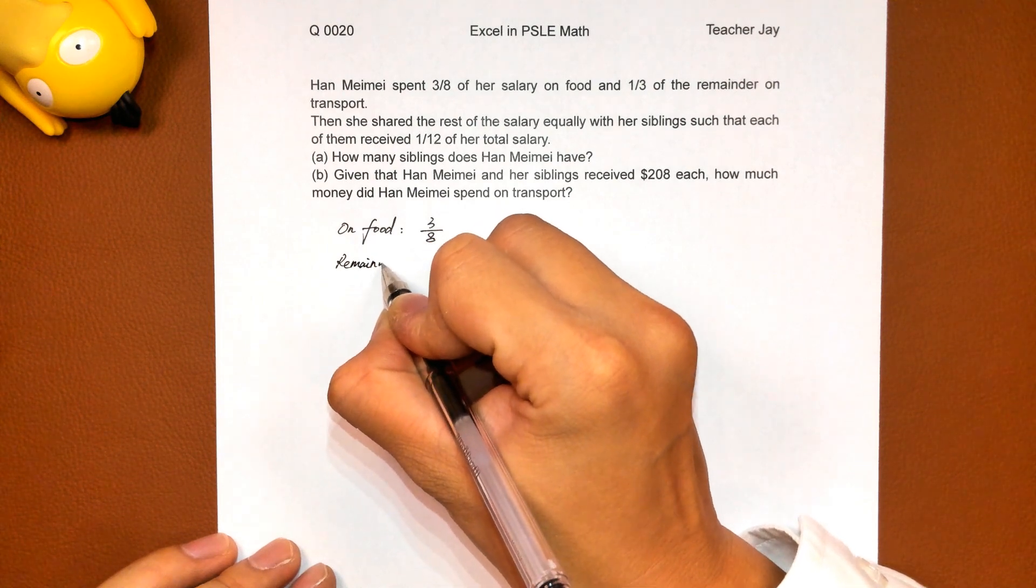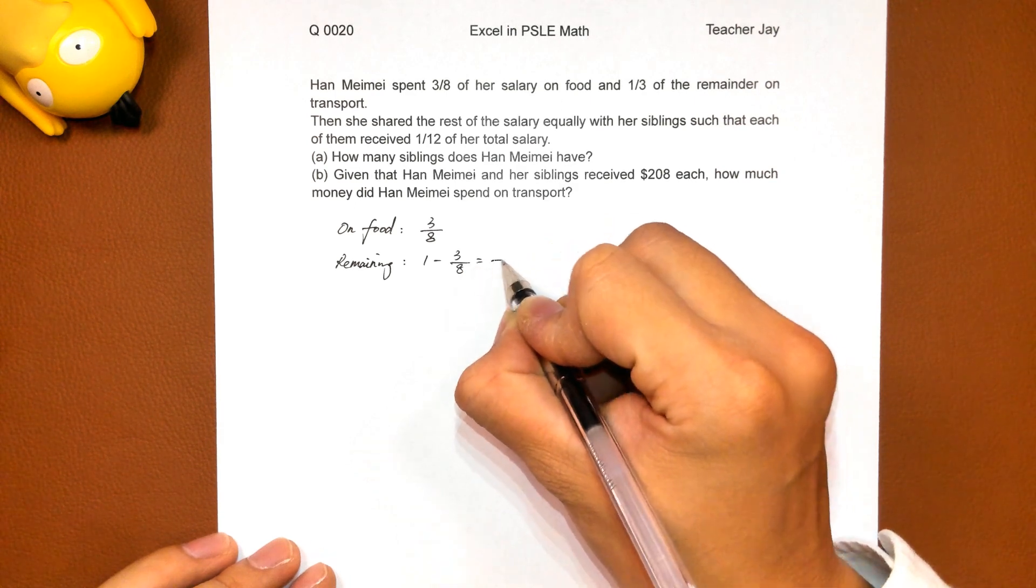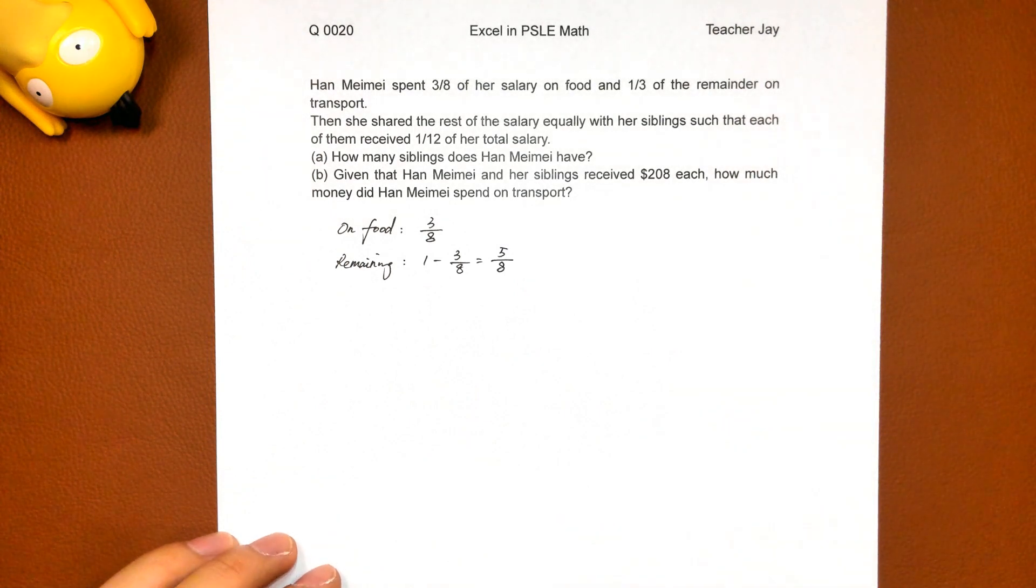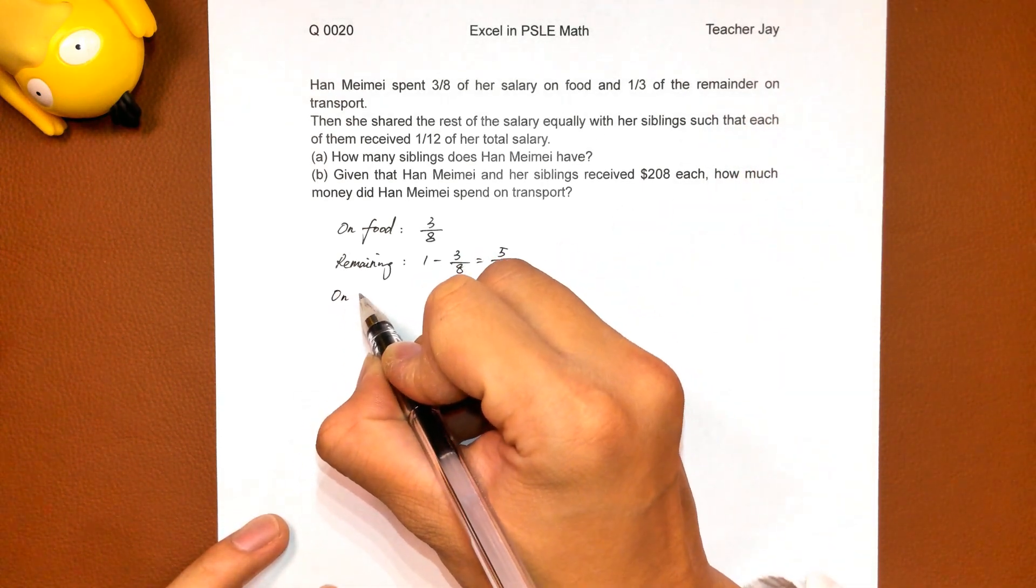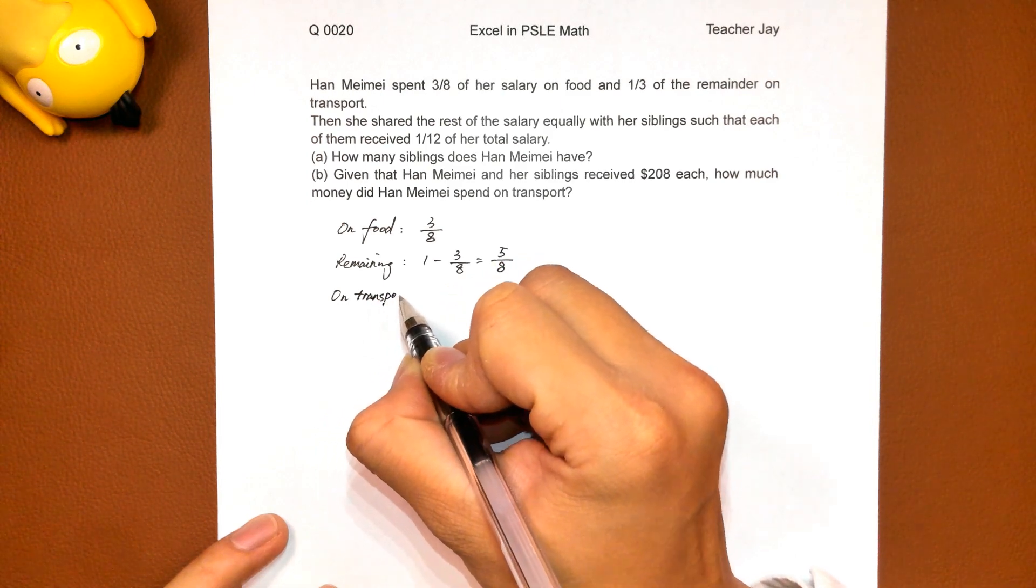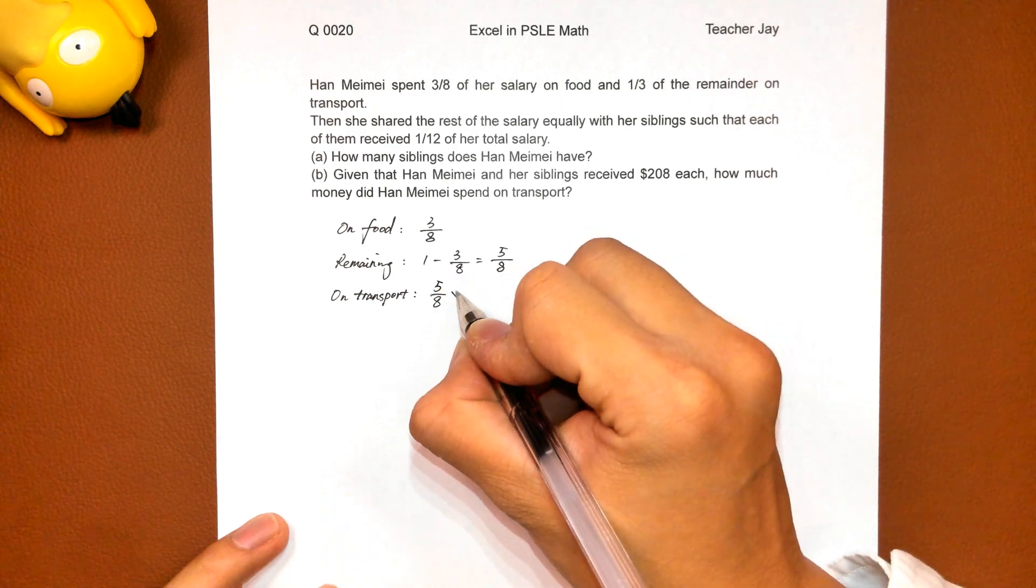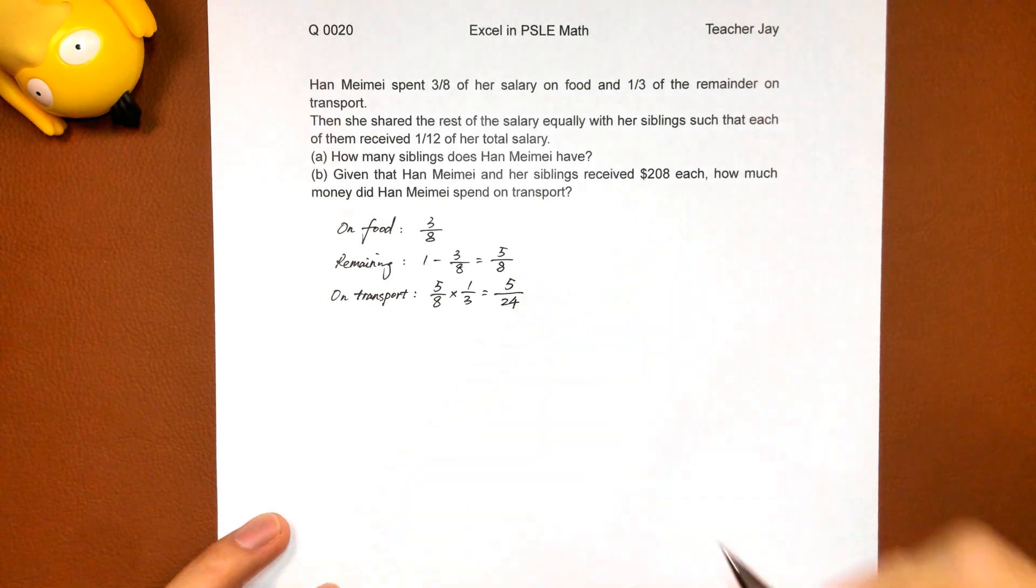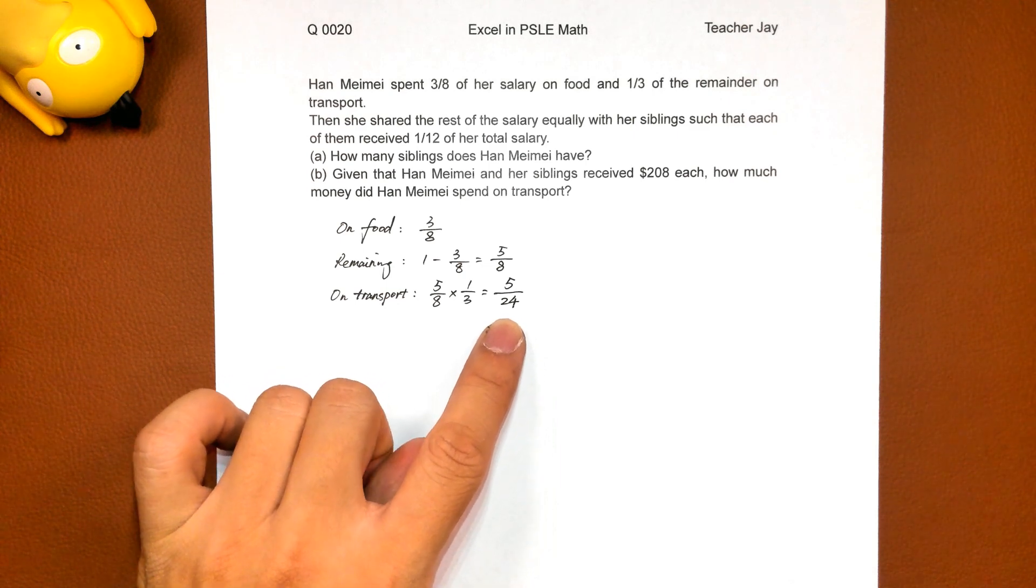So remaining one minus three eighths equals five eighths of her salary. And one third of the remainder was spent on transport. Transport: five eighths times one third equals five over 24. Since the denominator growing bigger to 24...